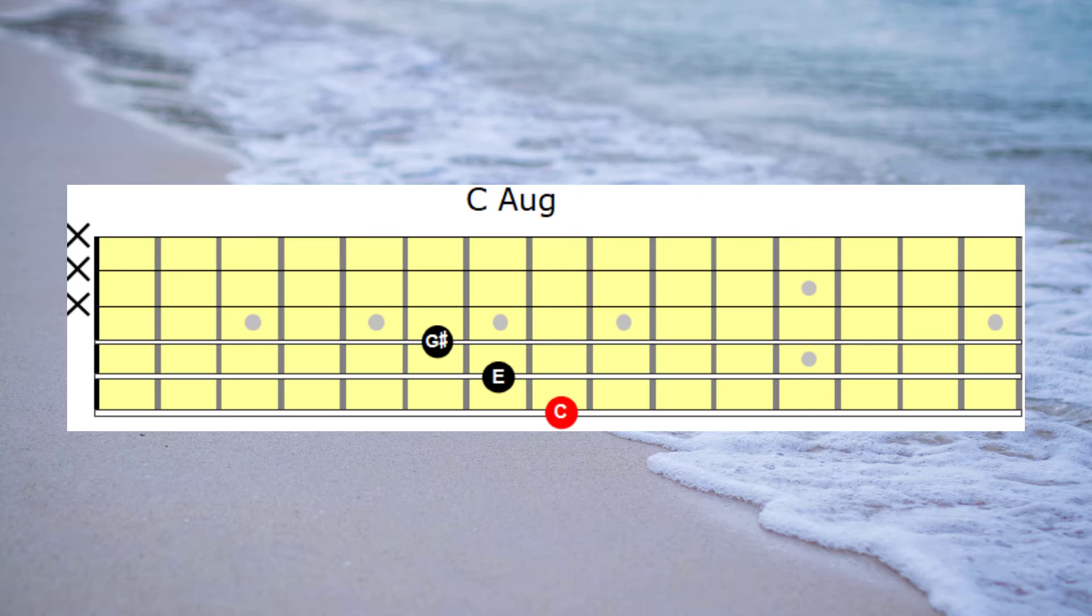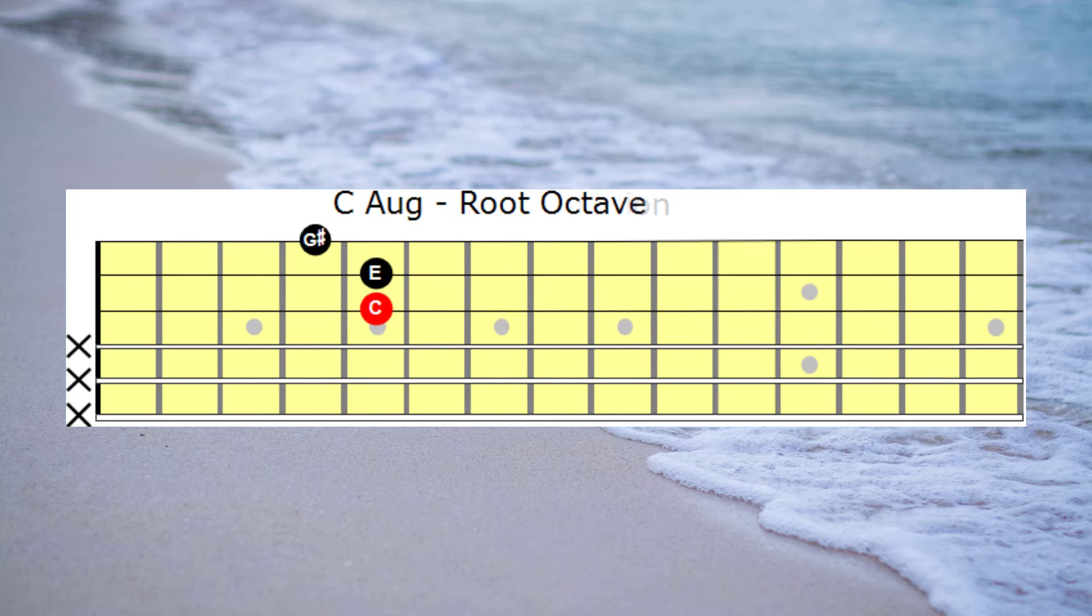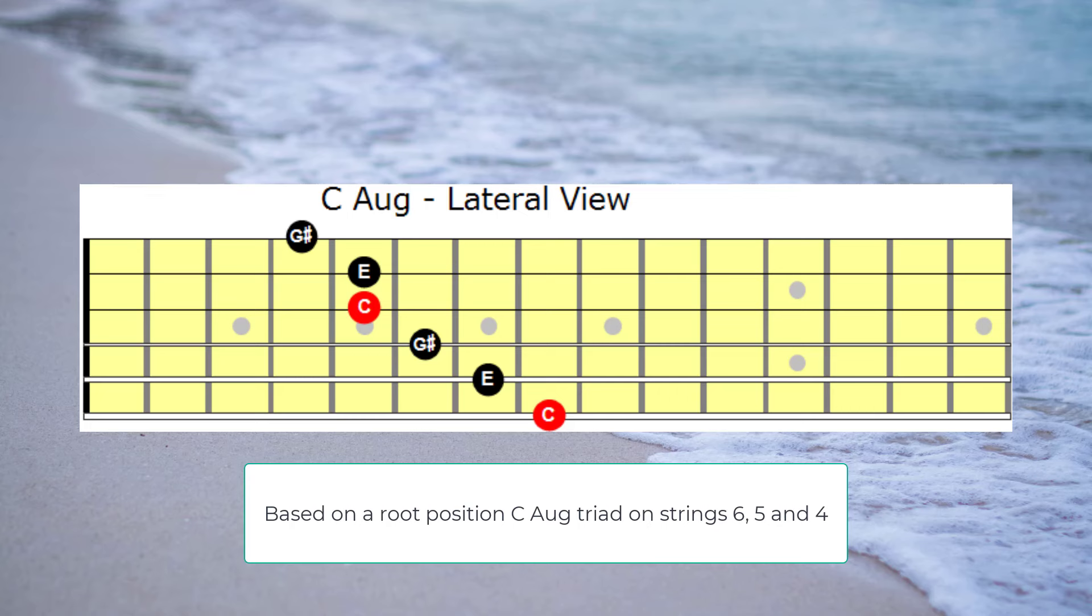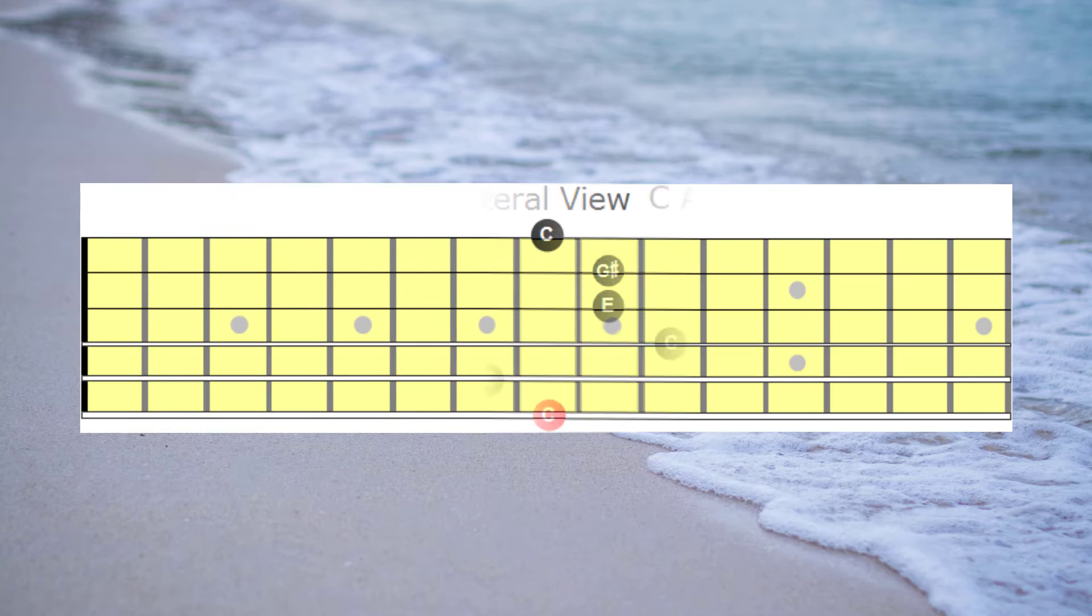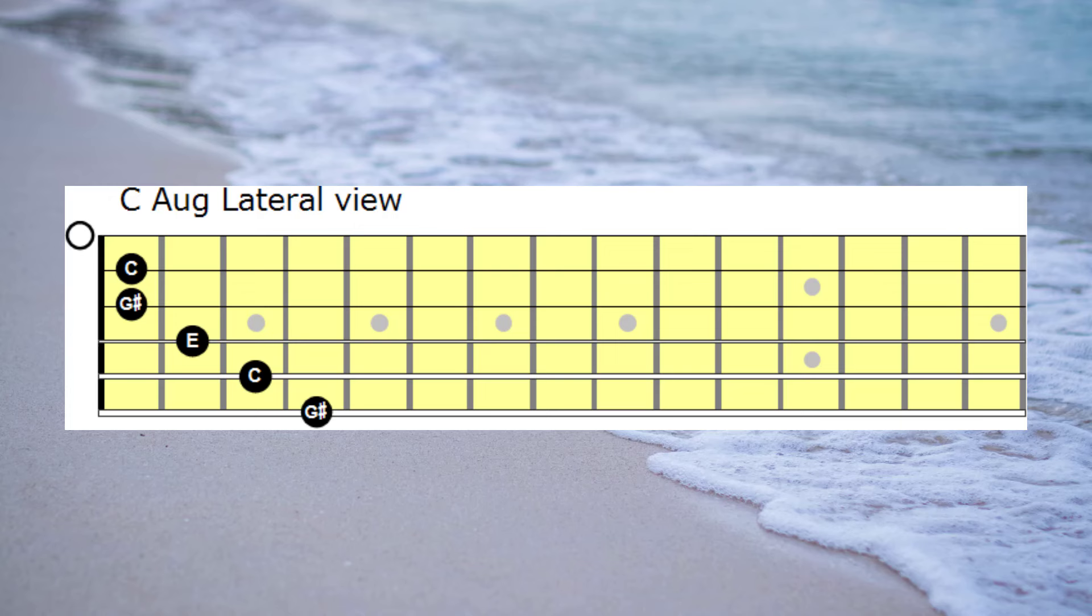Let's begin with the root position C augmented triad. And next we have the first inversion, followed by the second inversion, and then we have the octave root position C augmented triad. And now here's a lateral view of the C augmented triads based on a C augmented triad on strings 6, 5 and 4. Here's another lateral view of the C augmented triad. This time beginning with the first inversion C augmented triad, meaning we have an E on string 6, and then working our way across the fingerboard with the various inversions of the augmented chord. And now here's one more lateral view of the C augmented triad. This time we're beginning with the second inversion of the C augmented triad. Therefore we're starting with a G sharp on string 6 and then working our way across the fingerboard.